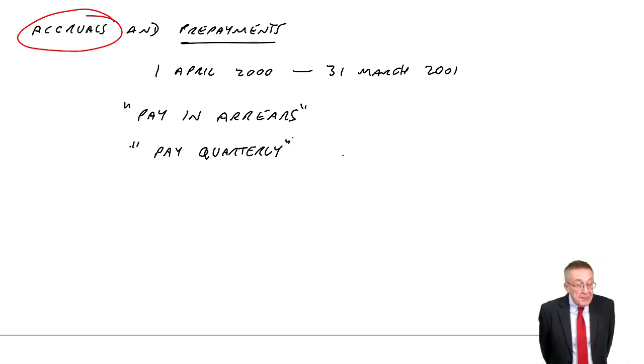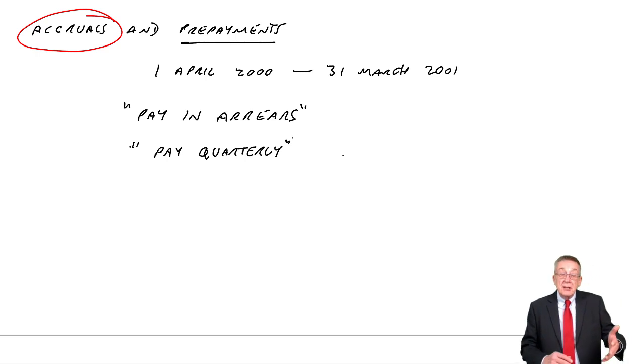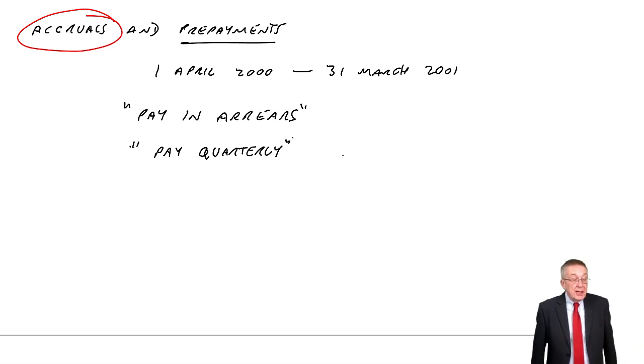remember his year ends on 31st of March. He estimated that 950 was owing for the three months to March, because remember that last payment was only to December. So he's still been using January, February, March. But at 31st of March, he estimated 950 was owing, but he's not received a bill yet. Of course he hasn't.